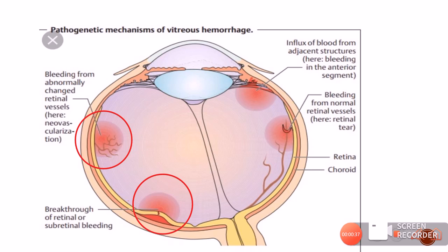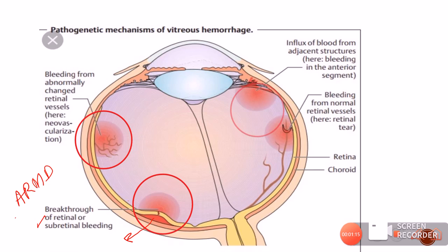The second cause is breakthrough of retinal or sub-retinal bleeding: a sub-retinal bleed may break through the retina into the vitreous cavity. This is seen in ARMD, specifically polypoidal choroidal vasculopathy, where massive sub-retinal bleeds from choroidal neovascular membrane can find their way into the vitreous. The third cause is influx of blood from adjacent structures — any pathology causing bleeding in the anterior segment, such as hyphema, can seep through the connection into the vitreous chamber.